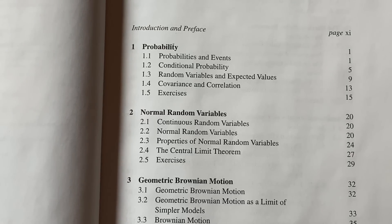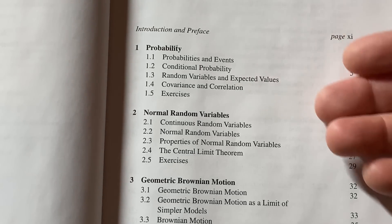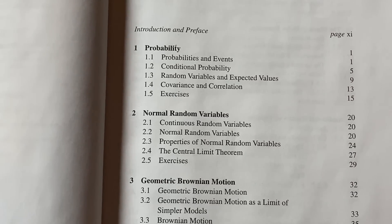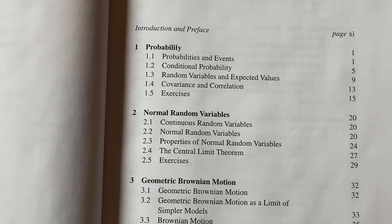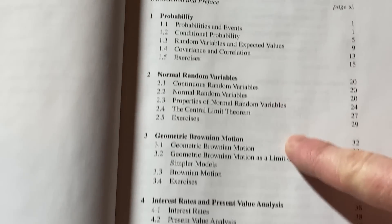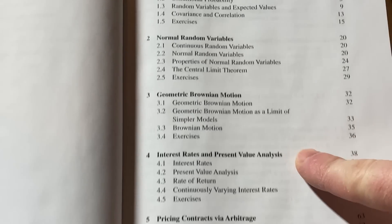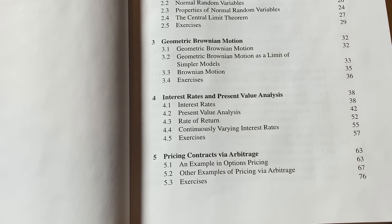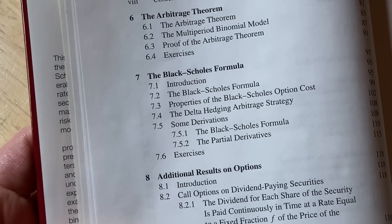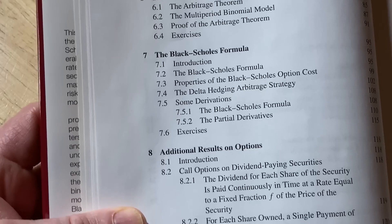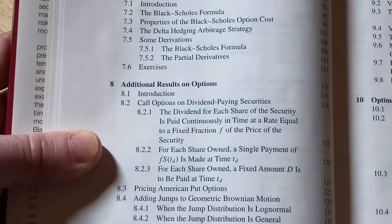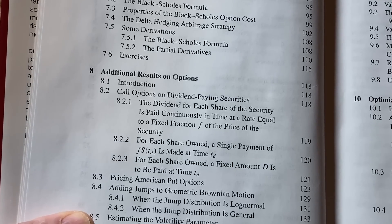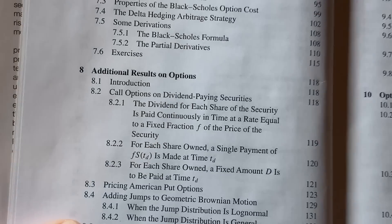Let's take a quick look at the contents. It starts with probability and assumes no prior knowledge. Topics include normal random variables, geometric Brownian motion, interest rates and present value analysis, pricing contracts via arbitrage, the arbitrage theorem, and then the Black-Scholes formula, which is derived from scratch. That is one of the main goals of the book.